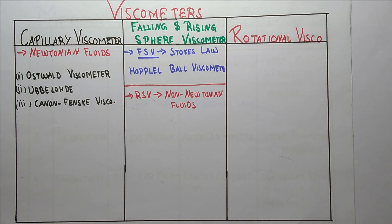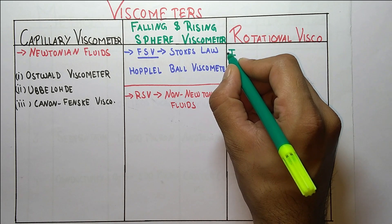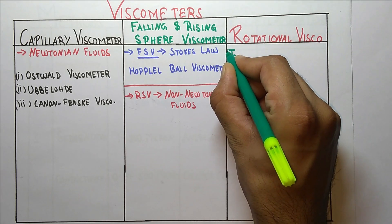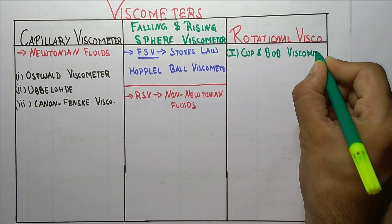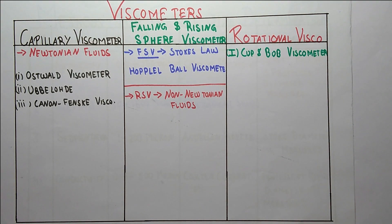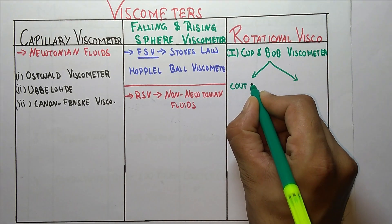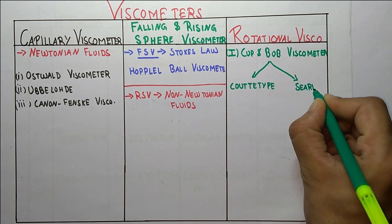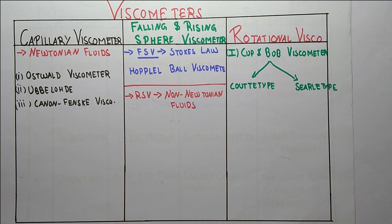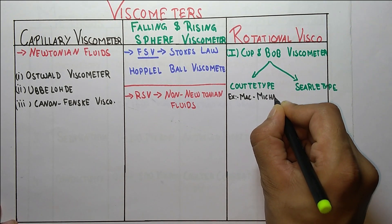Now coming to rotational viscometers, which are divided into two parts. The first one is the cup and bob viscometer, which is further divided into two types: the first is the Couette type and the second is the Searle type. The example of the Couette type is the MacMichael viscometer.